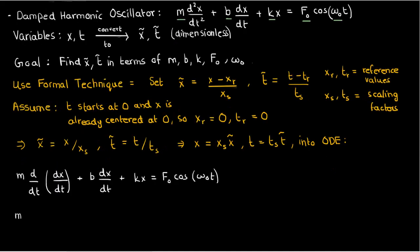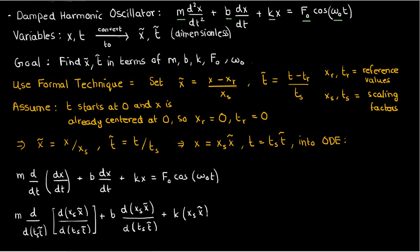If I plug in my x and t, here's what I'll have: m d/d(tₛt̃) · d(xₛx̃)/d(tₛt̃) plus b d(xₛx̃)/d(tₛt̃) plus k·xₛ·x̃ equals F₀ cos(ω₀·tₛ·t̃).